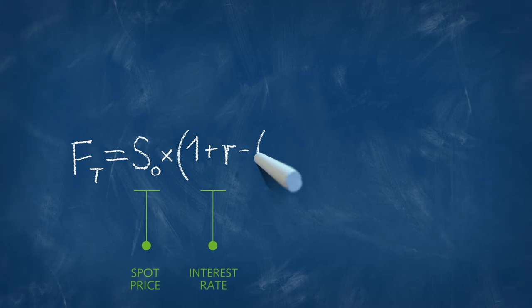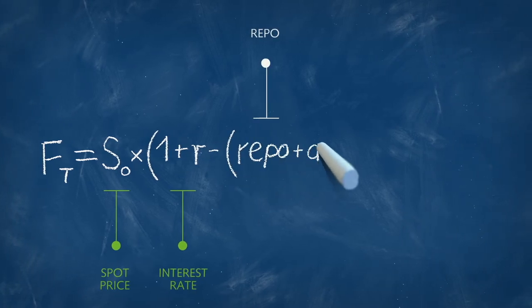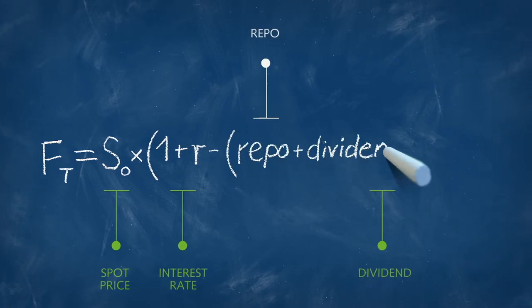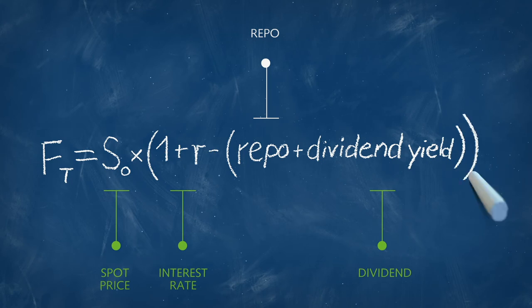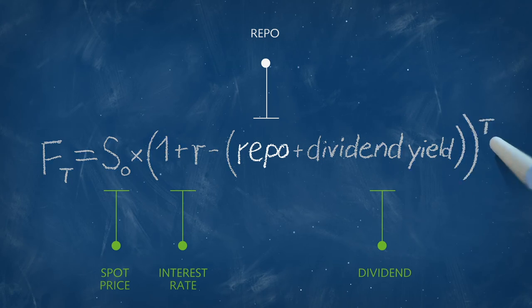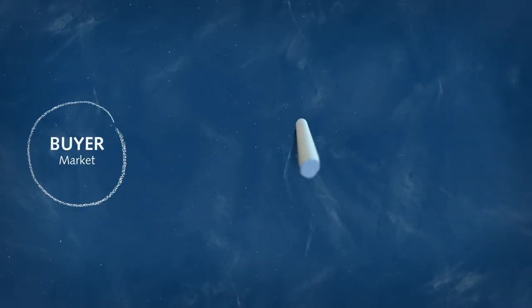Repo is the remaining component of a given equity forward's price once the spot interest rate and dividend risks have been stripped out. The TRF spread is quoted as the inverse of the repo rate, and it represents a component of the cost of carry in the underlying.